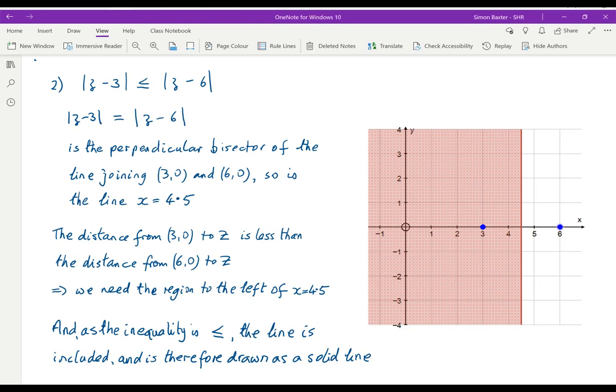Here we have a diagram showing the point 3, the point 6, solid line x equals 4.5 and anywhere over here the distance to 3 is less than the distance to 6.